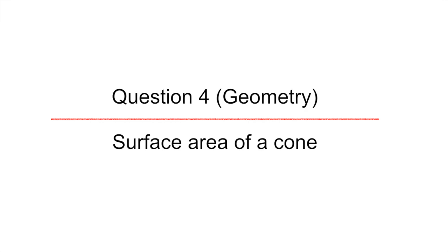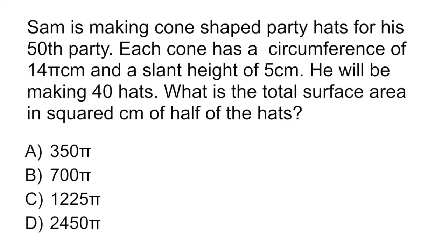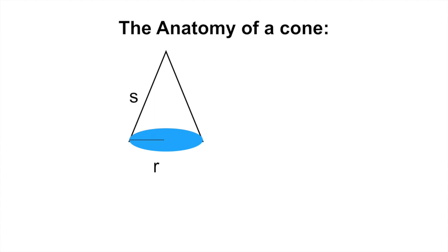Question 4 is a geometry question where they ask you to find the surface area of a cone. Sam is making cone shaped birthday party hats for his 50th party. Each cone has a circumference of 14 pi centimeters and has a slant height of 5 centimeters. He will be making 40 hats. What is the total surface area in squared centimeters of half of these hats? So this might look a little bit intimidating and you will have to use one of the formulas that they give you in the formula sheet. So before we get started with this problem, let's remind ourselves of the anatomy of a cone.